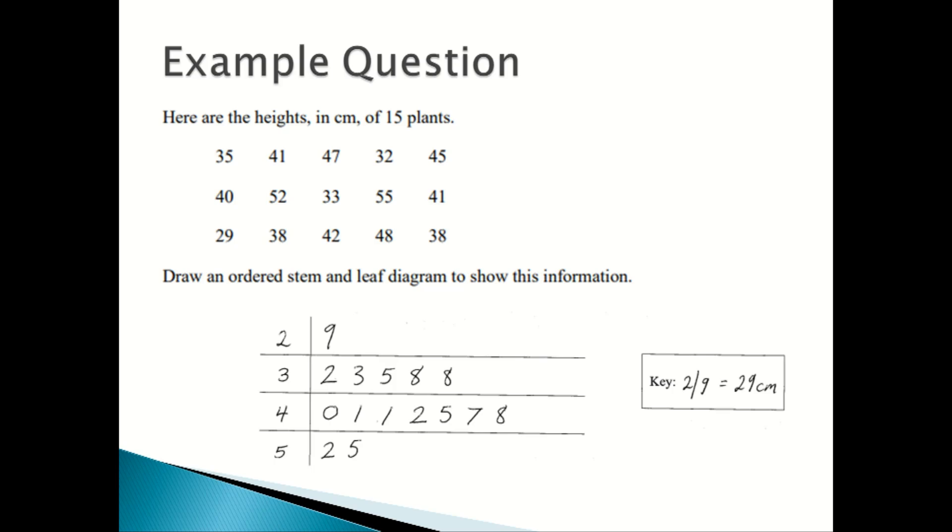So we have 40, 41, 41, 42, 45, 47, 48, 52, and 55, and also you can see on the right hand side we have the key: 2|9 equals 29 centimeters.